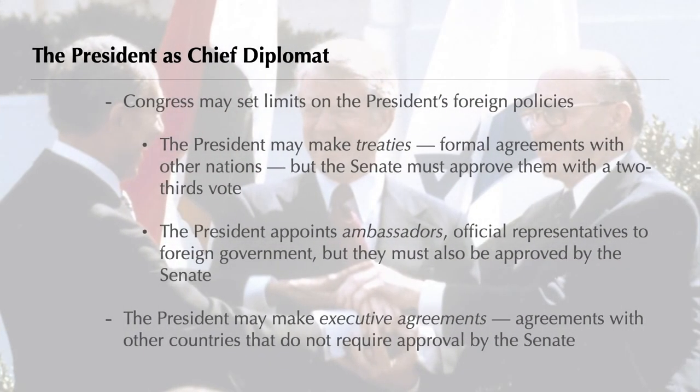Foreign policy is clearly the president's territory, but Congress may set limits. For instance, the president may make treaties, or formal agreements with other countries, but the Senate may approve or reject any treaty. The president's appointments of ambassadors, the official representatives to foreign governments, must also be approved by the Senate. The president does have freedom, though, to make executive agreements, agreements with other countries which do not need Senate approval. Executive agreements may have a wide range of purposes — they may set goals for trade or make promises to give aid to other countries.